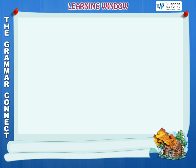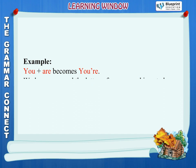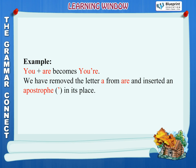Short forms are often used in spoken and written English. Short forms are made by joining two words together. For example, 'you' plus 'are' becomes 'you're'. We have removed the letter A from 'are' and inserted an apostrophe in its place.